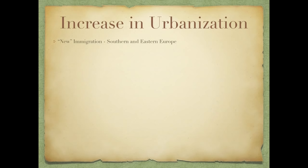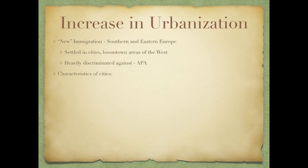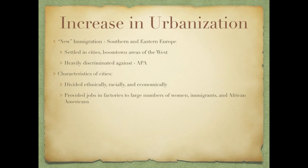Let's jump over to urbanization. We have new immigrants — people coming from southern and eastern Europe, places like Italy and Poland — who tended to settle in cities and boomtown areas of the West. They were heavily discriminated against by organizations such as the American Protective Association, or the APA, which was heavily anti-Catholic, very similar to the Know-Nothing Party prior to the Civil War. Characteristics of cities included divisions along ethnic, racial, and economic lines, and immigrants tended to settle in the same areas, giving rise to places like Little Italy and Chinatowns.